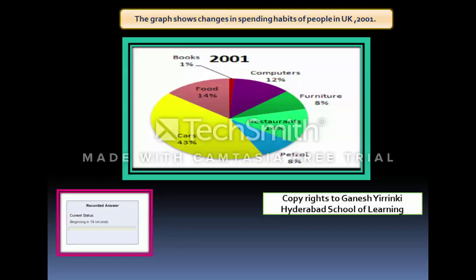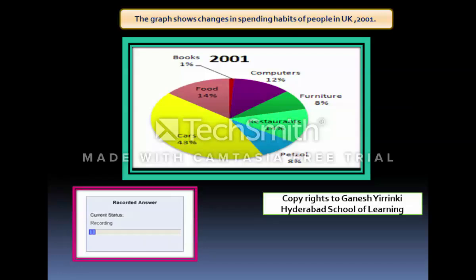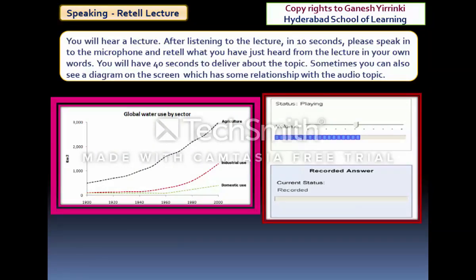This is how the Describe Image screen looks. You can see the diagram, and at the bottom it shows the current status — for example, 'Beginning in 19 seconds,' meaning you have about 25 seconds to view the diagram. Once it changes to 'Recording,' you are supposed to speak about the diagram into the microphone. Remember, you have just 40 seconds to present.